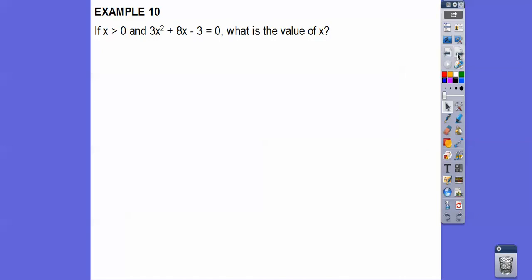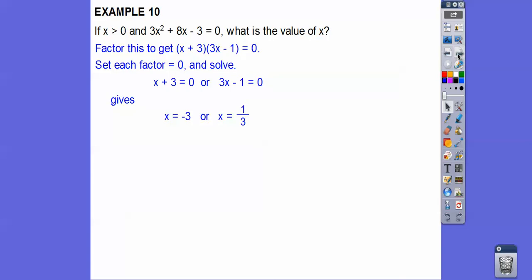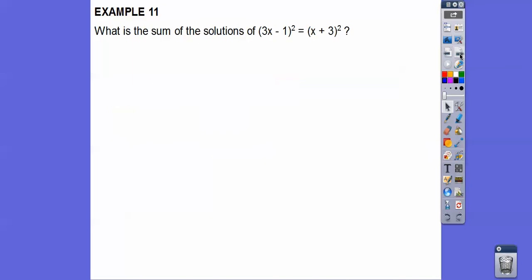Okay. All right. So if x is greater than zero, so here's one where x is greater than zero. So when we solve this, one of the answers will be less than zero, and it's not that answer. What is the value of x? So this factors to that. So when you set that equal to zero, and each factor equal to zero, we get here, we get x equals negative three, so it's not that one, because it says x is greater than zero, so it's one-third on that one.